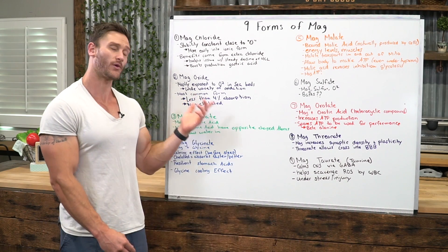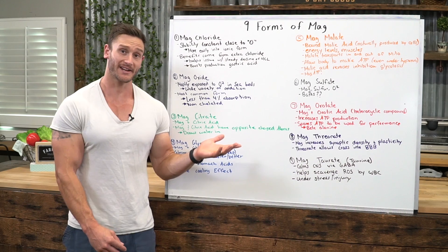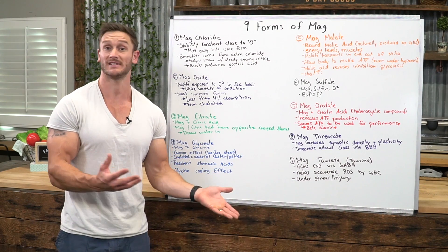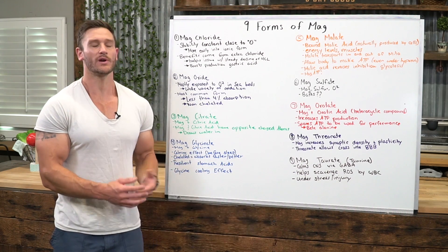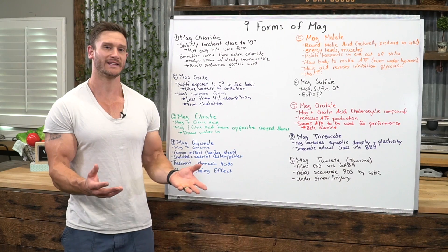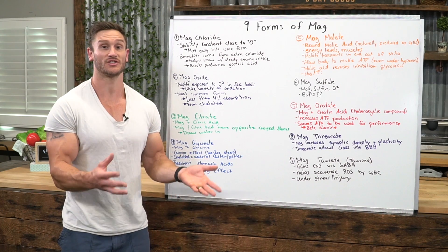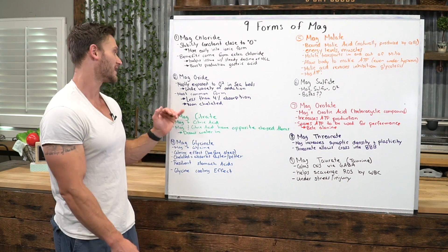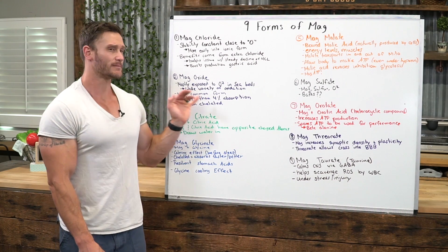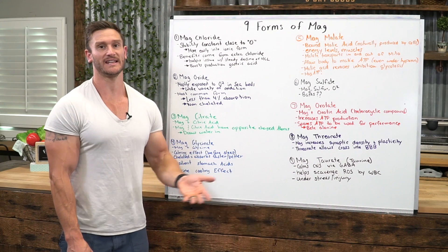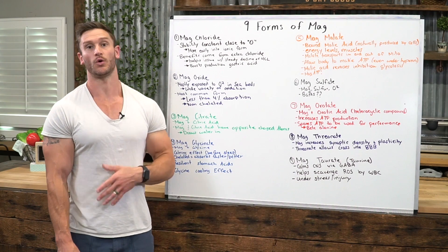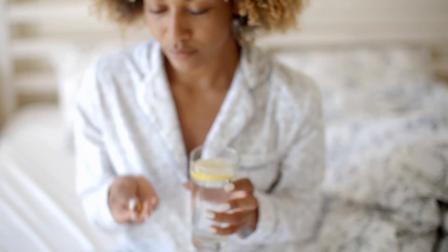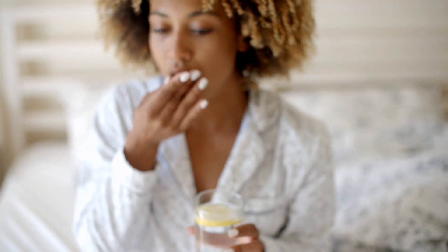We have a wide variety of oxidation because it all depends on where in the world it is, where the seabed is, how long it was sitting. So we don't have a real solid idea of how much oxygen it's actually been coupled with — what the oxidation level is. It is the most common form because it's the cheapest and the easiest; it doesn't require a whole lot of processing. The problem is it has less than a 4% absorption rate.